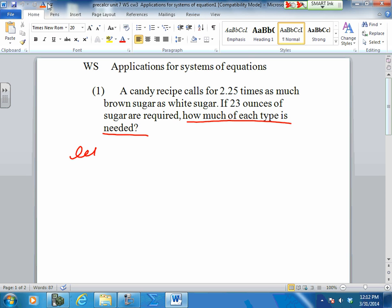If 23 ounces of sugar are required, how much of each type is needed? What types are there? White and brown. So here's your let statement. Let X equals white sugar, let Y brown sugar.